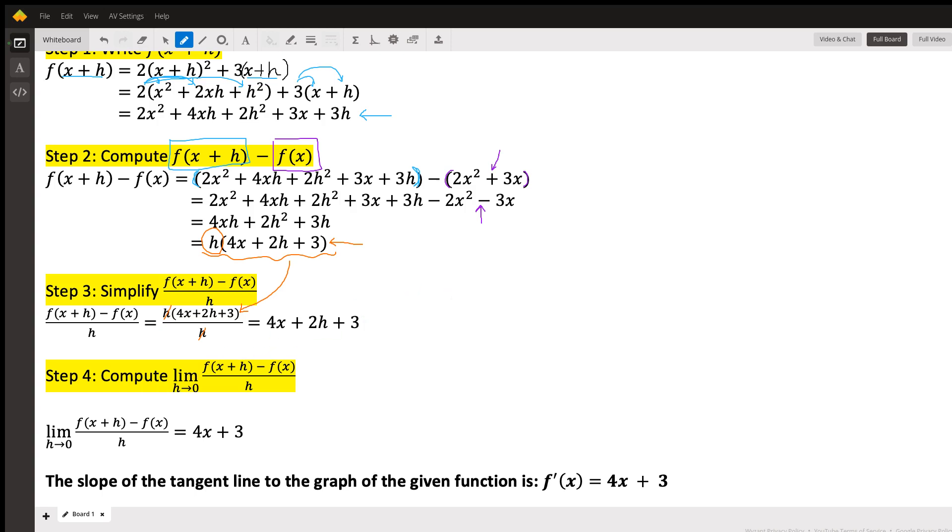For our very last step, we're going to calculate the limit as h approaches zero for this expression. So what that means is we're going to just let h equal zero. So we're just going to evaluate this over here, and we're going to say, hey, what do we get when h equals zero? Now, if you've done this right, at the very end, you shouldn't have any h's at all. And we have done it right. So what we have over here is that, of course, this becomes 4x + 0 + 3, and we're just left with 4x + 3.